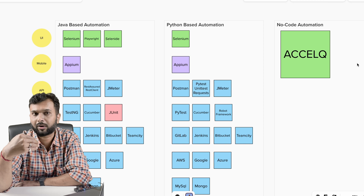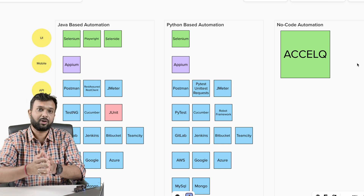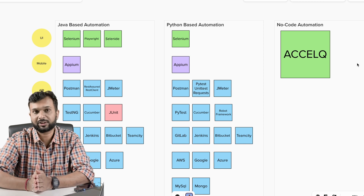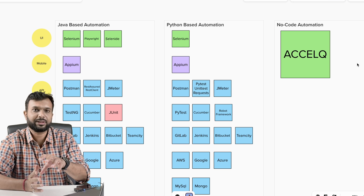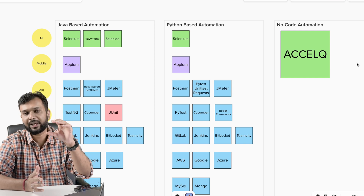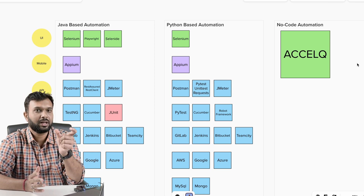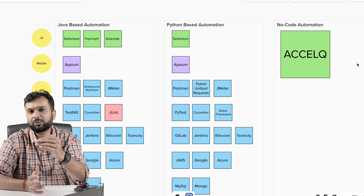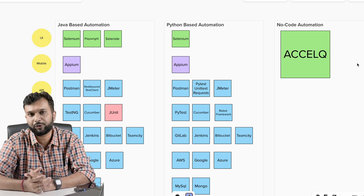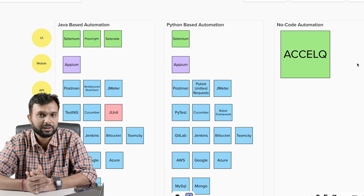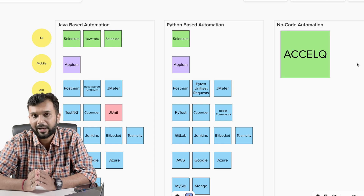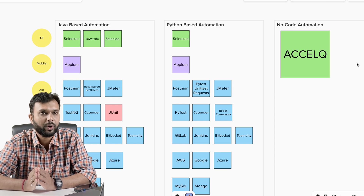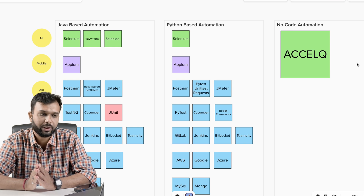These days, companies have started to realize that focusing more on unit testing and less on end-to-end UI testing reduces future maintenance. Most teams are now focusing more on backend or API automation, while UI automation is reserved mainly for end-to-end or regression test suites.